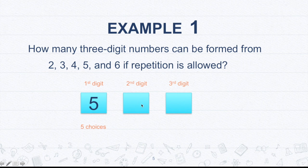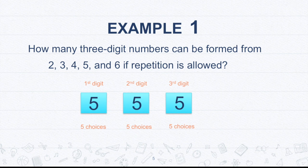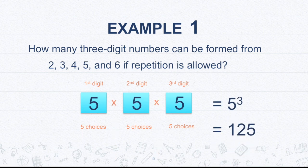Again, repetition is allowed. So if we have already picked the first digit here, we can still pick that for the second digit. So that means we also have five choices for the second, and we have also five choices for the third digit. And 555 is one of the examples of that three-digit numbers wherein repetition is allowed. So in short, this is equal to 5 to the power of 3 or 5 cubed equals 125.